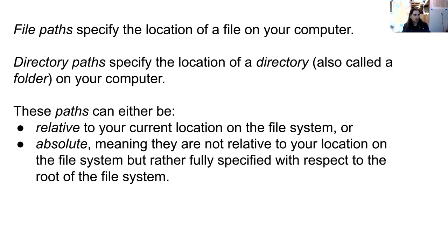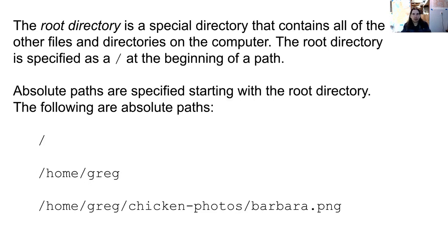Either of these path types can be relative, which means their meaning is dependent on where you currently are on the file system, or they can be absolute, meaning their meaning is not relative to where you are on the file system. They are rather fully specified with respect to the root of the file system. The root directory is specified by having a slash at the beginning of a path, so if you see a path that starts with a slash, that means it is an absolute file path.